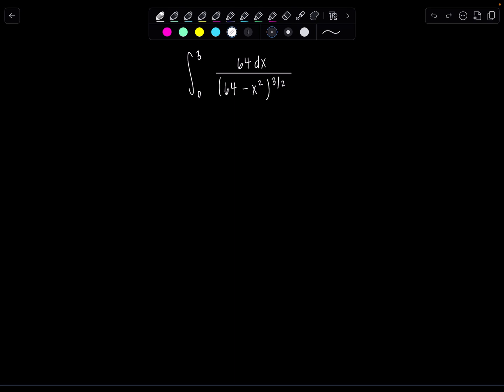So pause the video if you'd like to give it a shot on your own. You're going to need to use trig sub. And notice since we have this quantity here in the denominator, a constant minus variable quantity squared, then we're going to go ahead and use the substitution that involves sine theta. So I'm going to let x equal 8 sine theta. And then dx would be 8 cosine theta d theta.